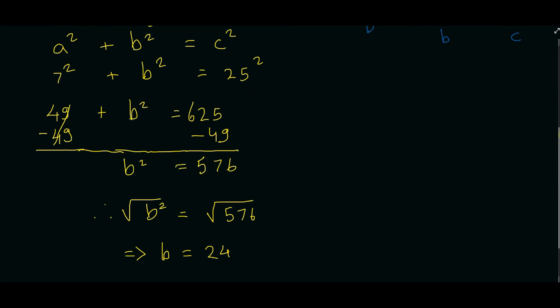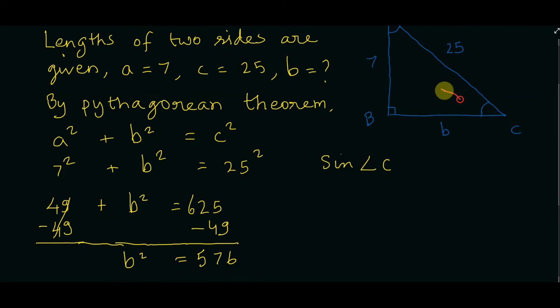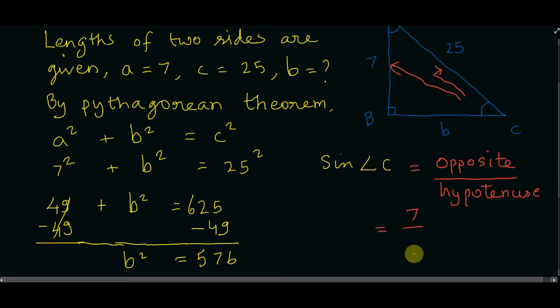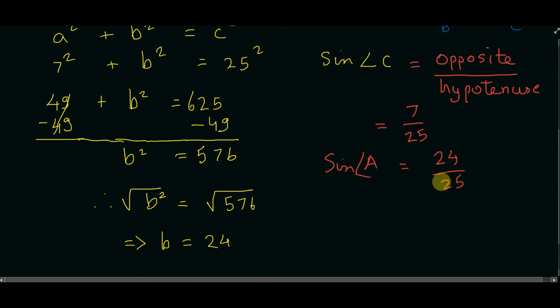Now we have all three sides, we can compute the sine values. Sine of angle C is opposite side divided by hypotenuse, which is equal to 7/25. Similarly, sine of angle A is equal to 24/25.